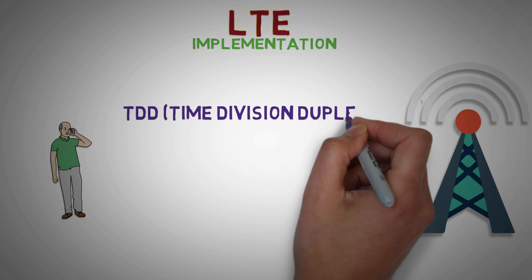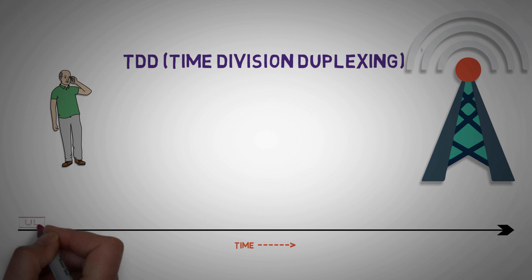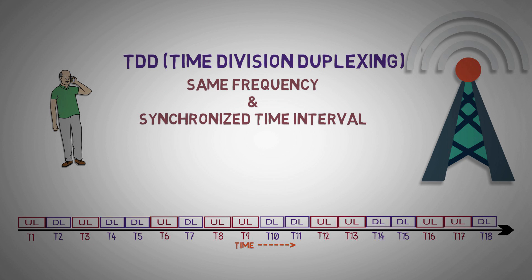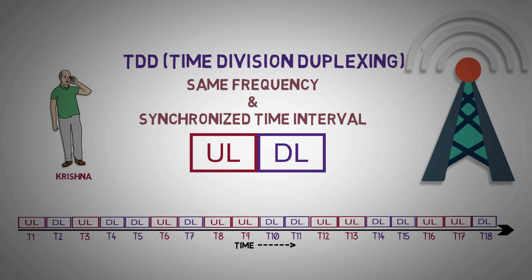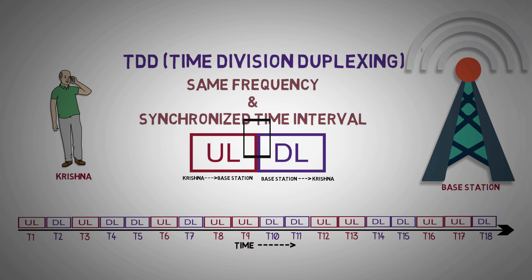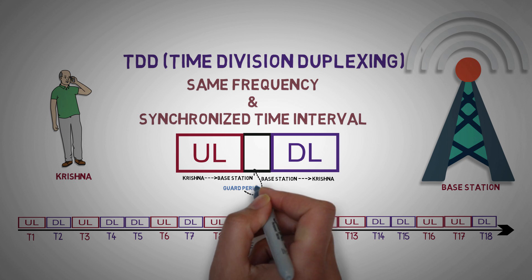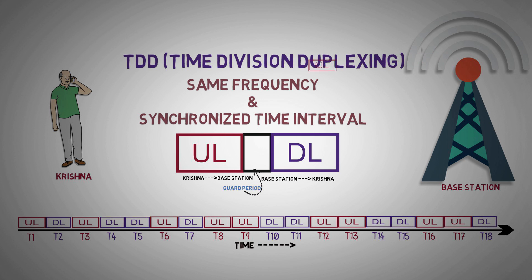Moving forward to TDD: time division duplex is a technique by which the uplink and downlink transmissions are carried over the same frequency by using synchronized time intervals. For example, a TDD communication path is set up between Krishna and a base station. Krishna can alternatively transmit and receive over time — using time slot 1 to transmit, slot 2 to receive, slot 3 to transmit, and so on — with the base station doing the exact opposite. As transmission periods are relatively short, no time delay is noticed on voice transmissions. Between time slots there are guard periods so that signals traveling from the base station can arrive at Krishna before Krishna starts transmitting.